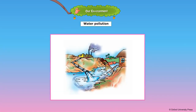In villages, rivers are used for washing clothes, bathing and for washing animals. In cities, drains from households and toxic or poisonous waste from factories empty into rivers and make them dirty. Pesticide sprayed on plants finds its way to rivers. This leads to water pollution. Polluted water becomes unfit for drinking.